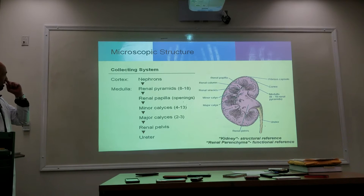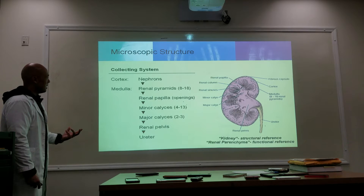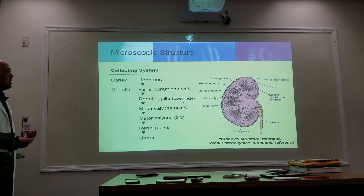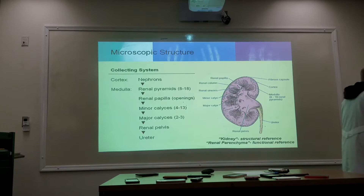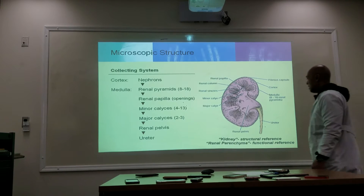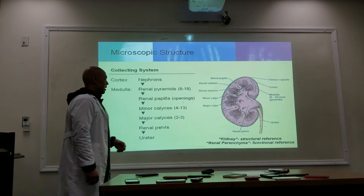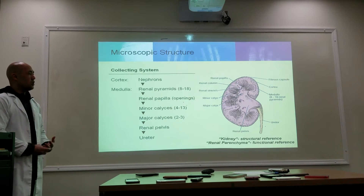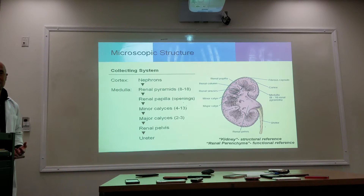The kidney has two basic layers: the cortex on the outside and the medulla in the middle. The cortex is where you find the functioning portion of the kidneys — this is where the nephrons are located. When we refer to the kidney as a structural component, it's a structural reference, whereas the renal parenchyma is the functional reference. Physicians often refer to it as the renal parenchyma.